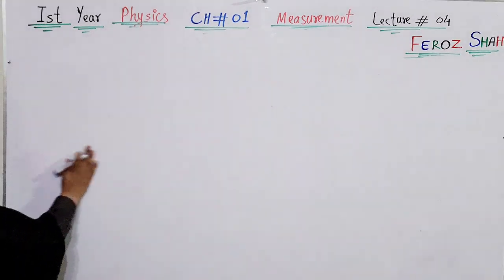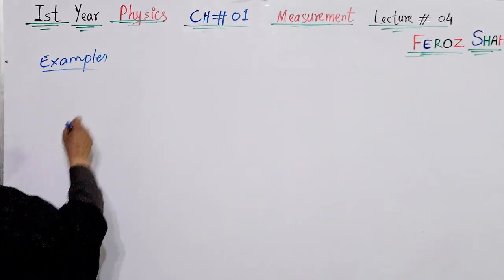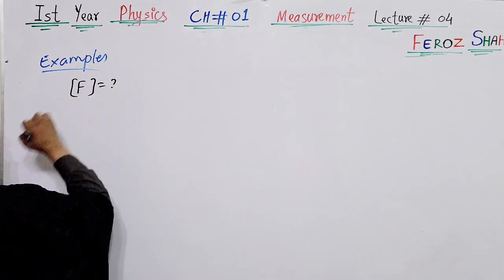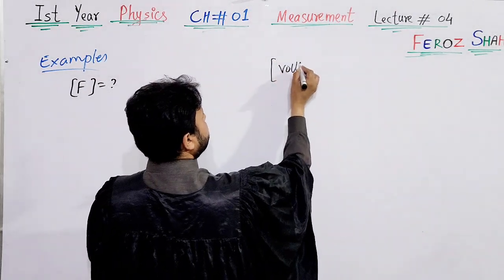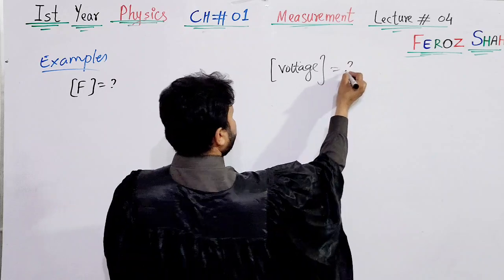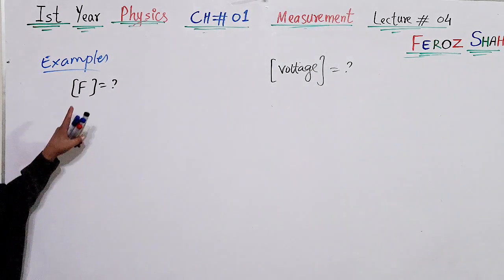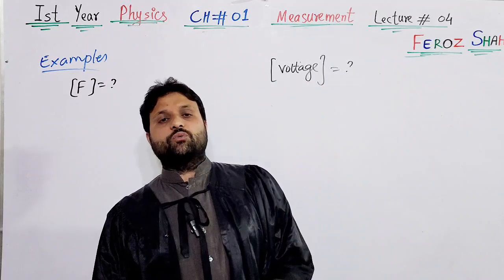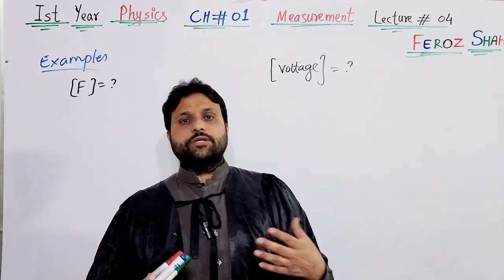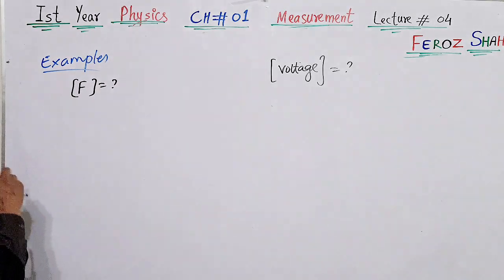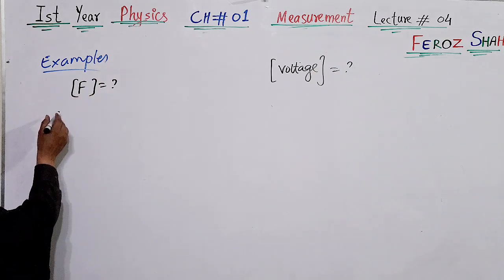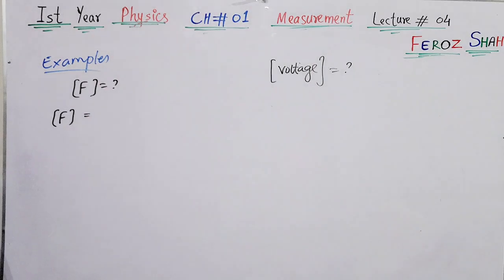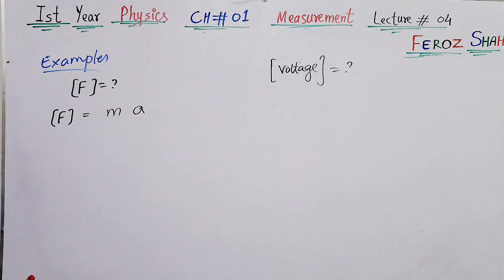Examples of dimensions — let me work through two examples. First, I want to find the dimension of force, and second, the dimension of voltage. Force is a derived quantity and voltage is also a derived quantity. Finding their dimensions means splitting these derived quantities into their respective base quantities. Step one: put force in square brackets. Step two: use the equation F = ma.